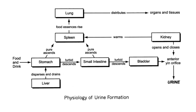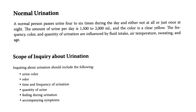Here is the diagram of the physiology of urine formation discussed earlier. In normal urination, a normal person passes urine four to six times during the day and either not at all or just once at night. The amount of urine per day is 1500 to 2000 ml and the color is a clear yellow. The frequency, color, and quantity of urination are influenced by fluid intake, air temperature, sweating, and age.